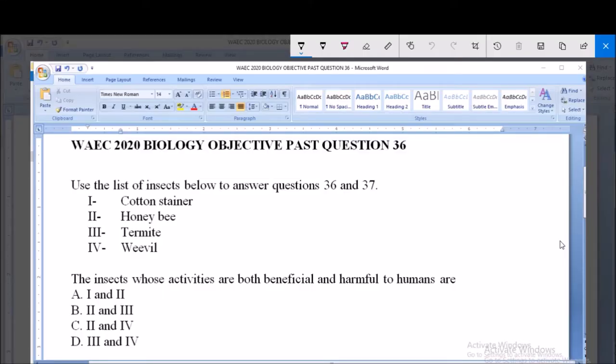Hello and welcome, I'm going to be answering WAEC 2020 Biology Objective past question 36. So we have a list of insects here: cotton stainer, honeybee, termite, and weevil, and we are to use them to answer questions 36 and 37.